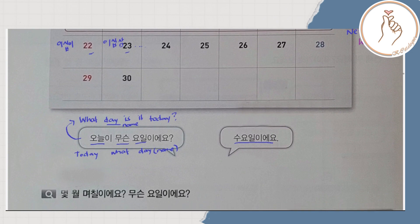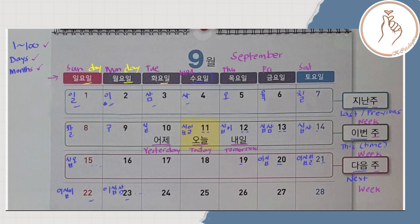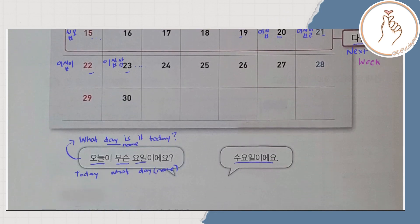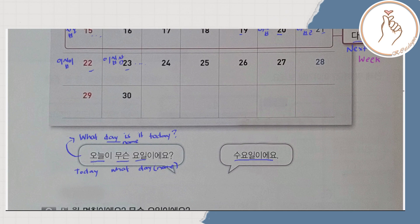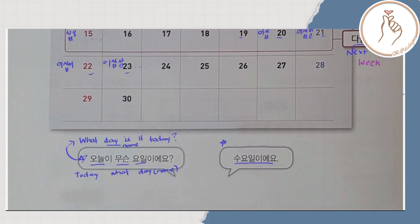For example, today is November 29, 2022, which is Tuesday. So if I ask you: Onuri musun yoi rieyo? — What day is it today? — the answer would be Tuesday, which is Huayuil. So the answer is: Huayuil iyeyo.